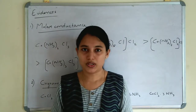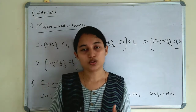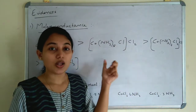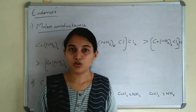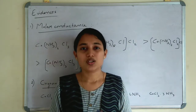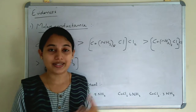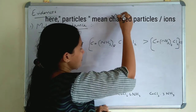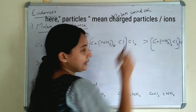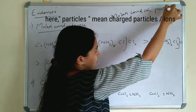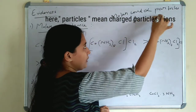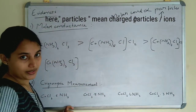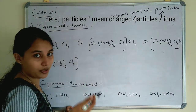Now we can see the evidences of Werner's theory. Werner conducted a reaction adding excess ammonia to cobalt chloride and obtained different coordination compounds. The first evidence for Werner's theory is molar conductance measurement. Molar conductance depends upon the number of particles and charge. Greater the number of particles, greater the molar conductance. This is the decreasing order of molar conductance for the compounds obtained from Werner's reaction.